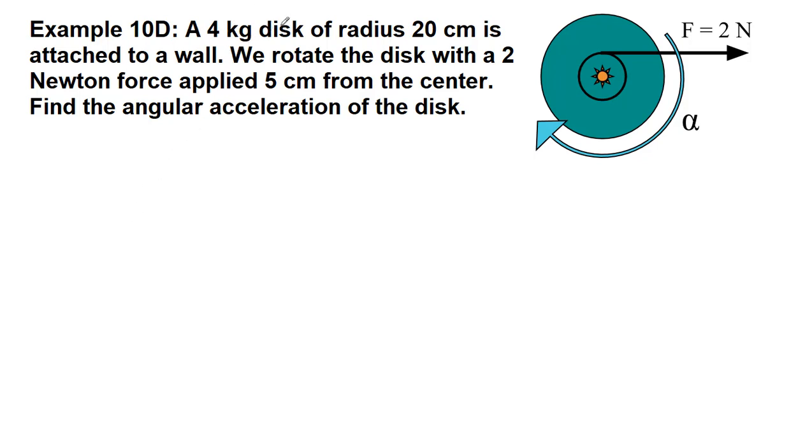So here we have a disk of radius 20 centimeters, so I'm going to start to list the given information just because there's going to be enough of it that we want to keep track of it all. The mass of the disk is equal to 4 kilograms. The radius of the disk is equal to 20 centimeters, but we need to turn that into meters as we've been doing since chapter one, so that's 0.2 meters.